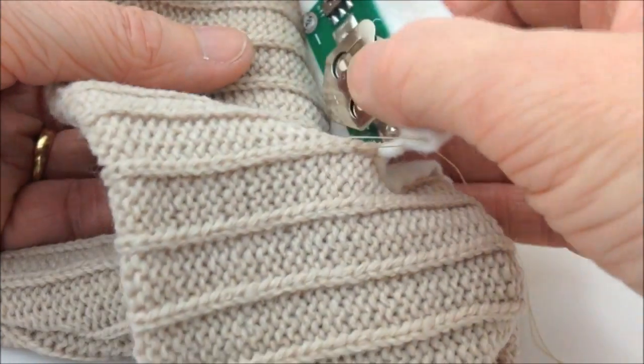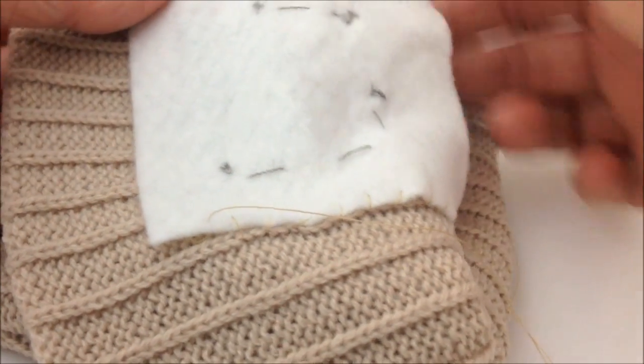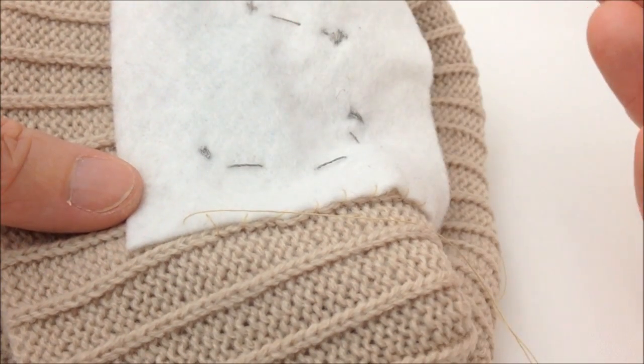You do want to make sure that you can actually access where the switch is on the inside of the felt. You could also have poppers on each corner so that this whole thing can be removed for washing, for example.